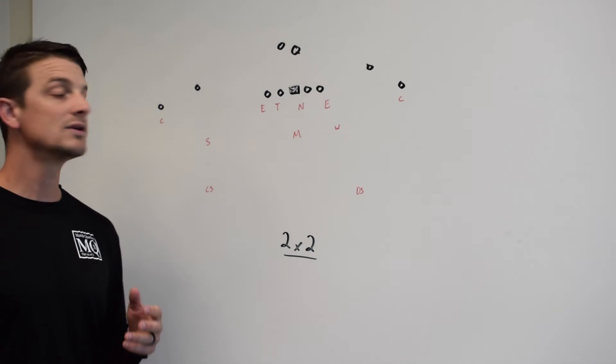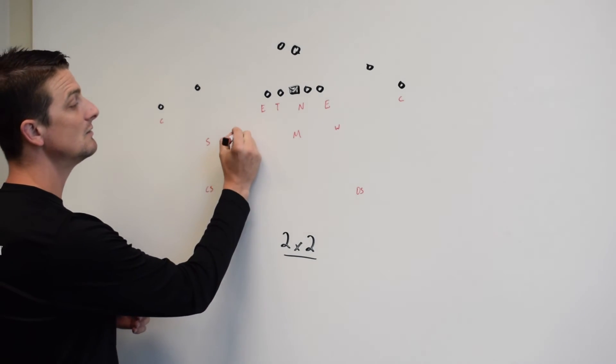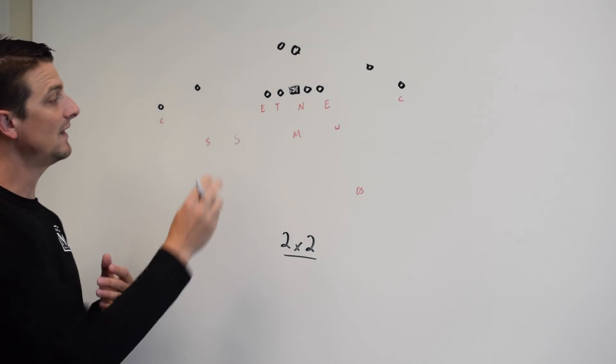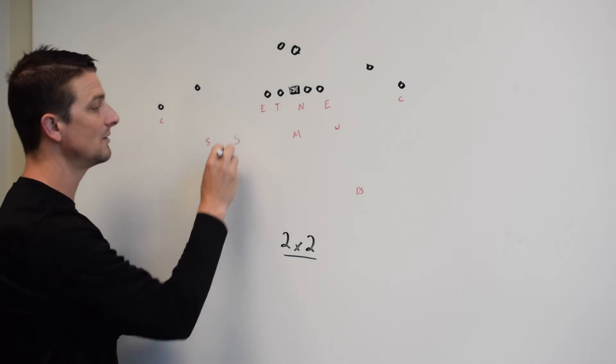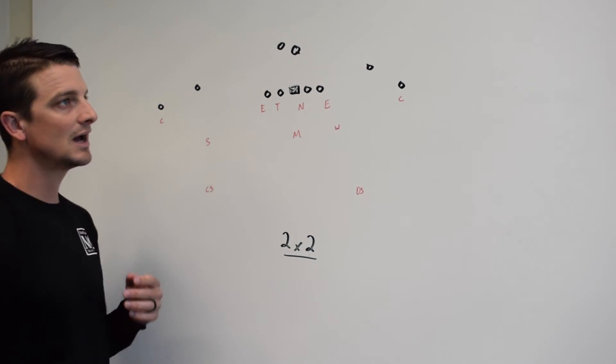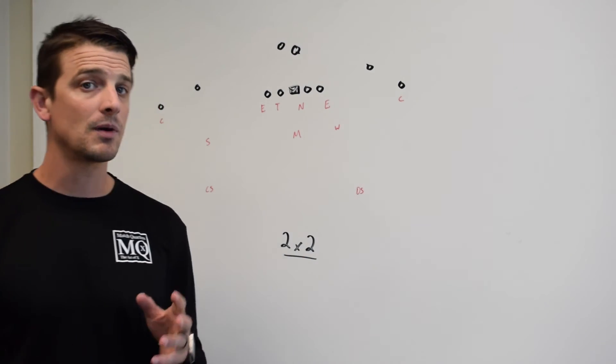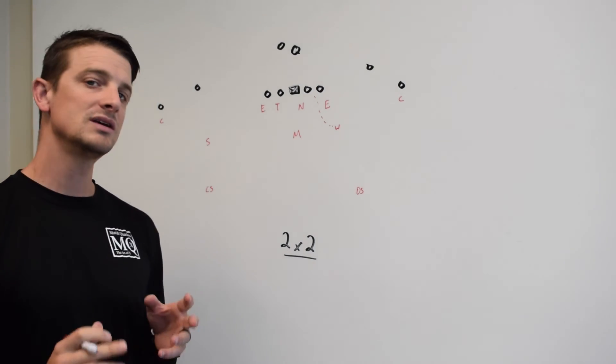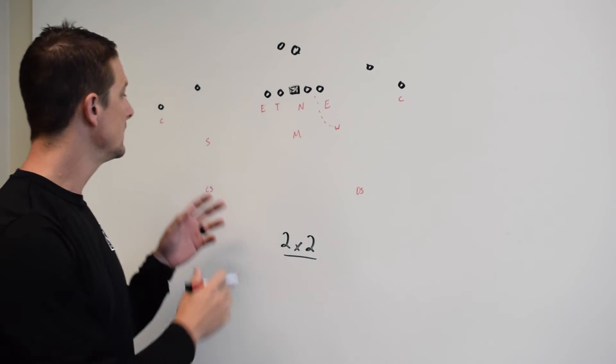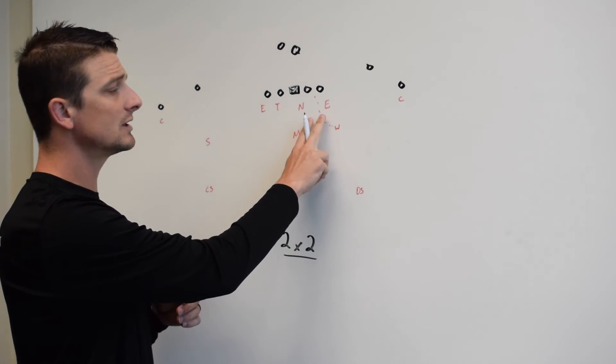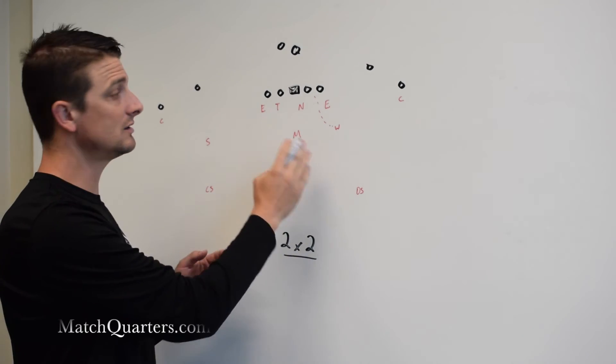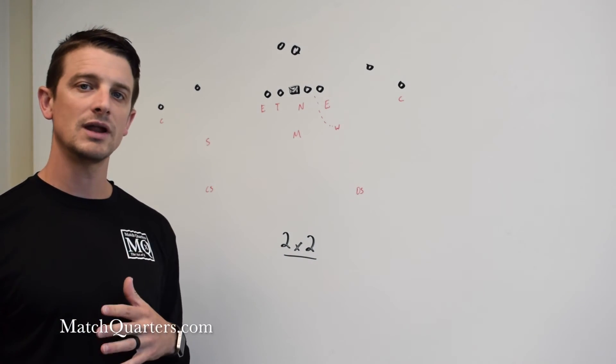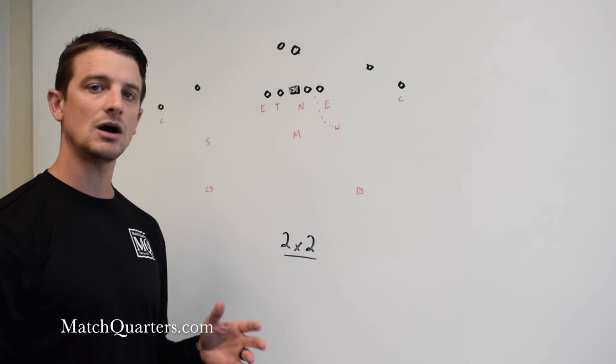If you're running more of a 4-3 scheme and you're using the Sam as a force, he most generally will be in an apex position. And that allows him to be that force on the box. To the boundary side, your cover down is going to be on the Will. Now the problem with the Will is he's a conflict player. He has to fold into the B gap. So his cover down will be less than if he was a Sam. If I were to set the strength over here in an under front, right now it's in an over front, the Will would then be able to have a full cover down.